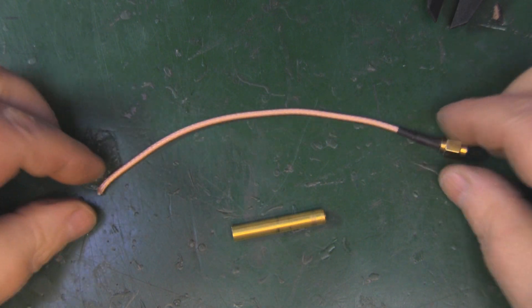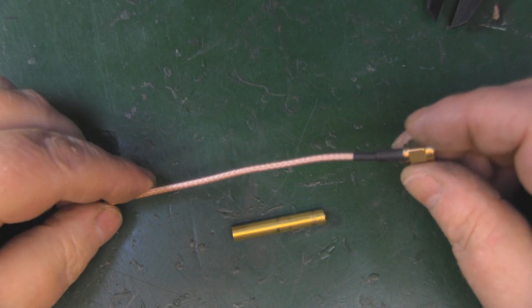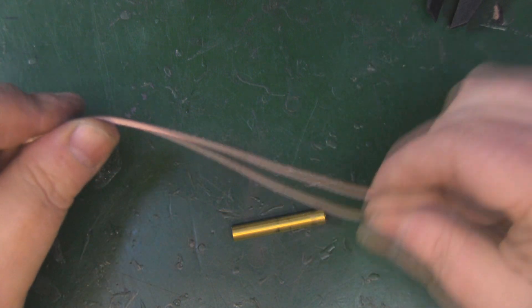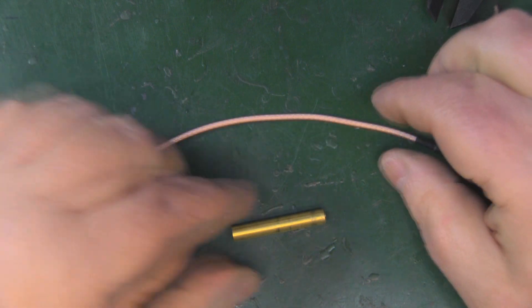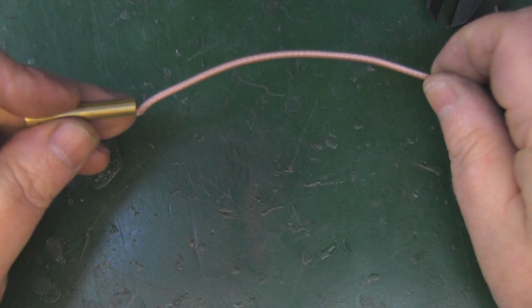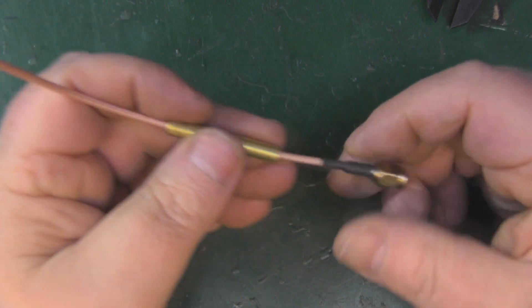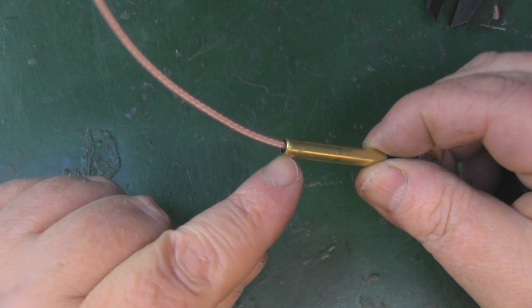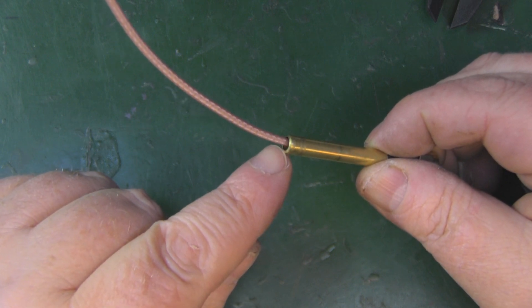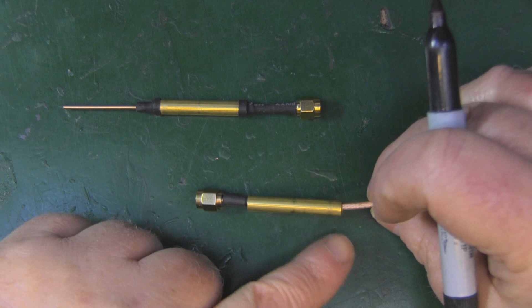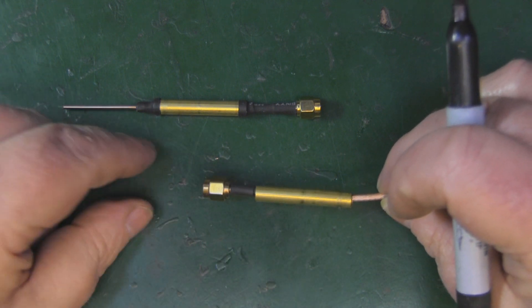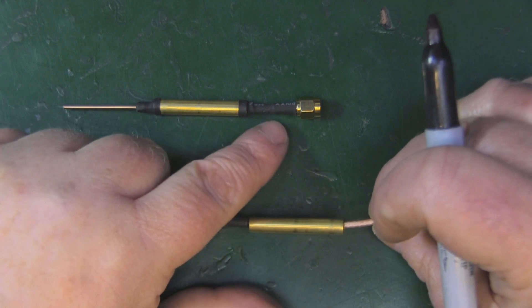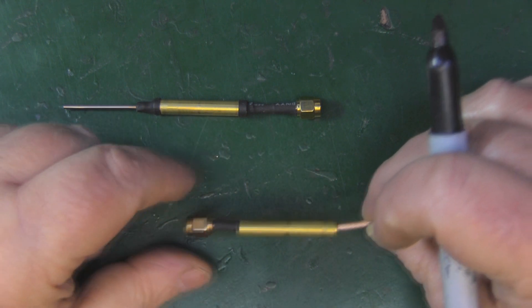To start off with you're going to need a length of coax and I find it a little bit easier if you crimp on the SMA connector first. What we're going to be doing is soldering this up through the tube and soldering the outer braid of this coax to the outer edge of this tubing. We're going to trim back the coax so we can solder it on here and this is where you can decide how long you want this area to be.